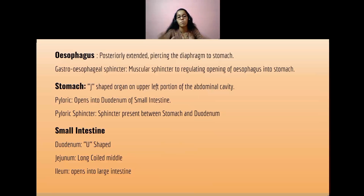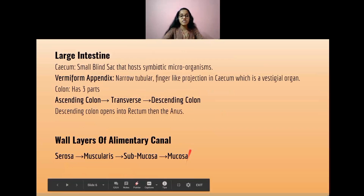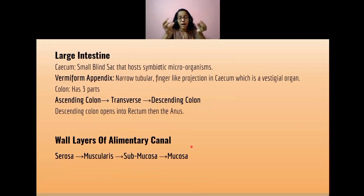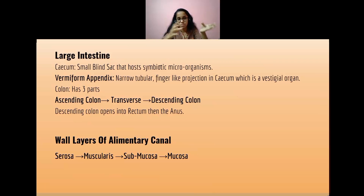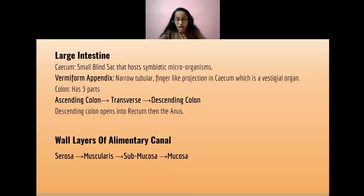The small intestine has the duodenum, which is U-shaped, then the jejunum, which is the highly coiled middle portion, then the ileum, which opens into the large intestine. In the large intestine, the cecum is the first portion and has a small blind sac that holds symbiotic microorganisms. The vermiform appendix is this small blind sac — a narrow, tubular, finger-like projection in the cecum, which is vestigial. The colon has three parts: the ascending colon, transverse colon, and descending colon, which opens into the rectum and then the anus.